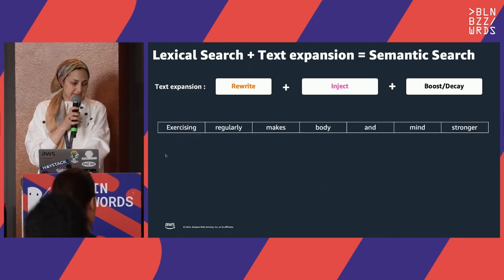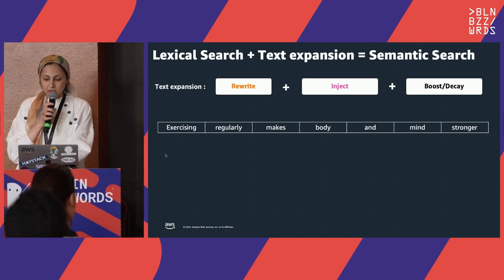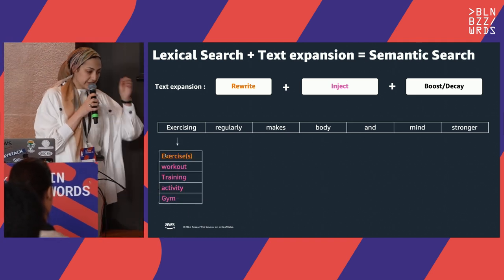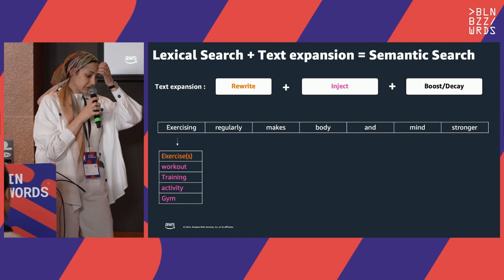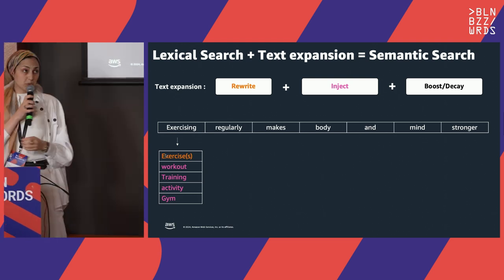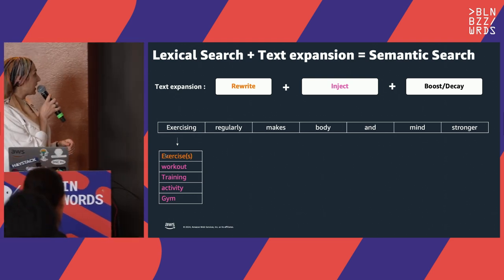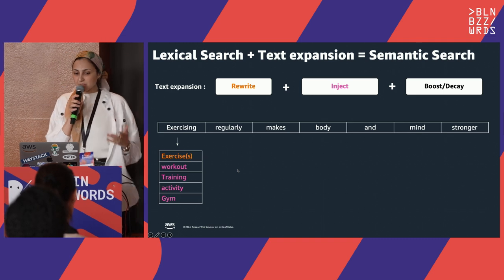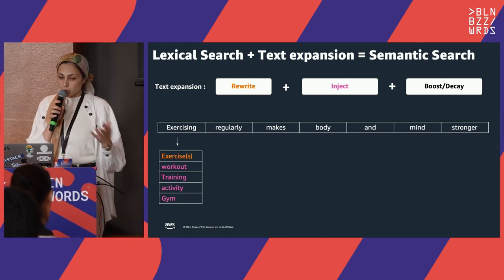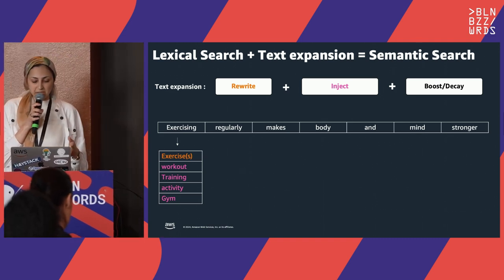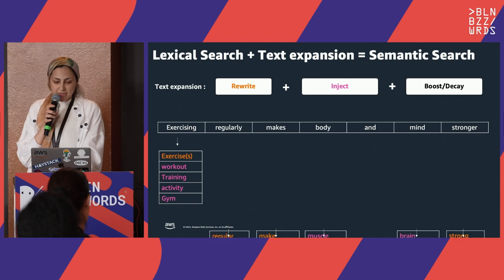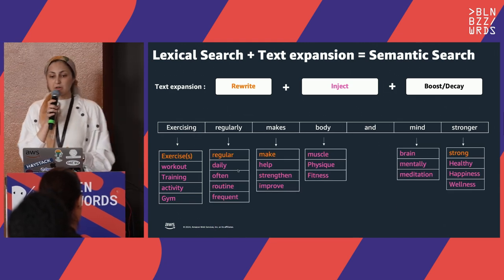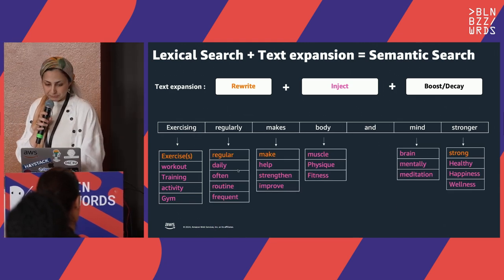Taking the same document example, for the token 'exercising', it would be related to 'exercise'. We inject new tokens like 'workouts', 'training', 'activity', 'gym', and similarly for the rest of the tokens in your query.